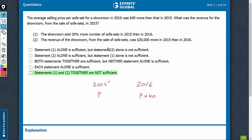We need to find the revenue in 2015. Statement 1 only talks about the ratio - 20% more in 2015 than in 2016. This doesn't give us the value of P, so statement 1 alone is not sufficient.